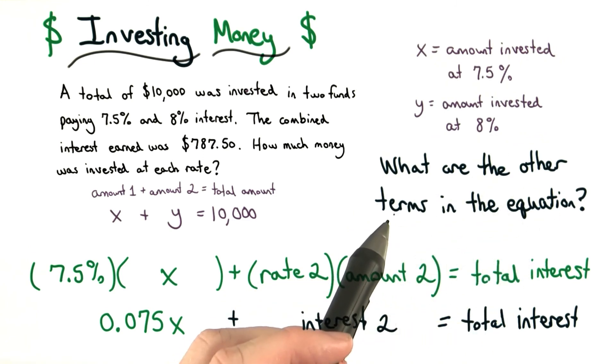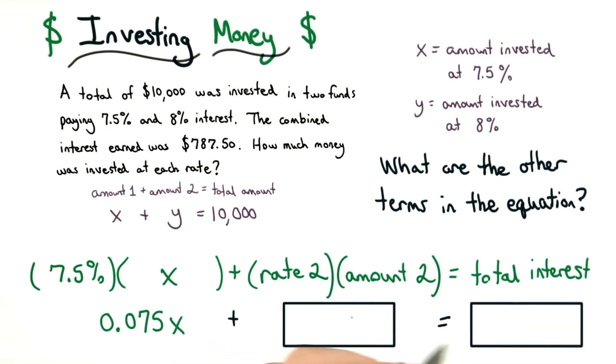So what are the other terms in the equation? What should go here for the second interest, and what should go here for the total interest? You can write the terms in these boxes.